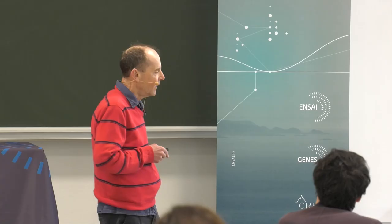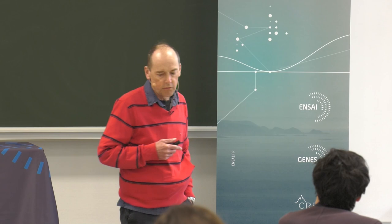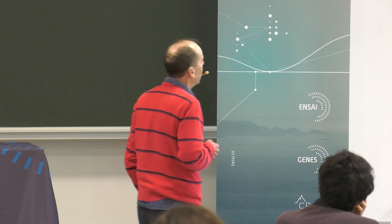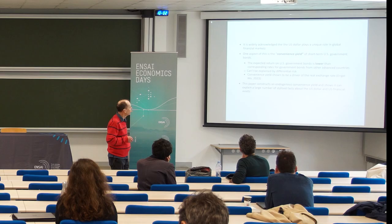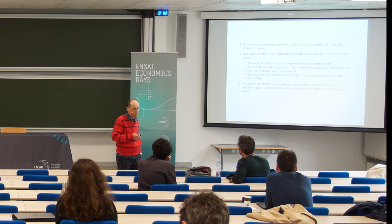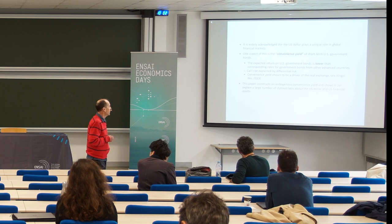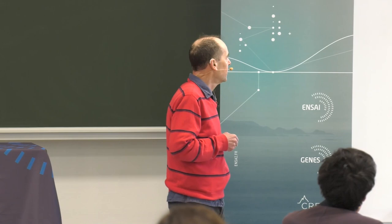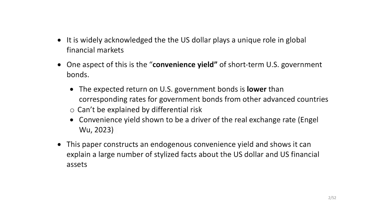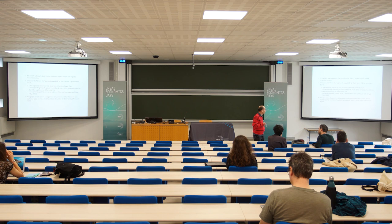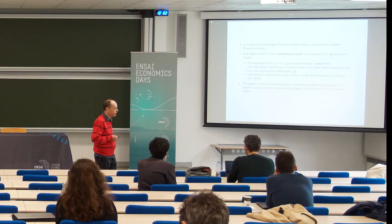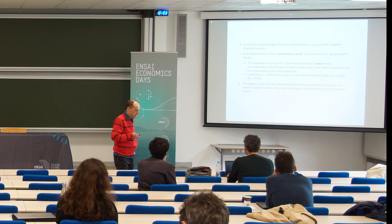This can't be explained by differential risk — these are more or less riskless assets. Previous literature, including Charles and Steve among other papers, has shown that this is actually a driver of the US real exchange rate. What we do in this paper is construct an endogenous convenience yield driven by particular aspects of constraints in financial markets, and we show it brings together a large number of facts about the US dollar, US financial assets, the role of the US in financial crises, and global imbalances.